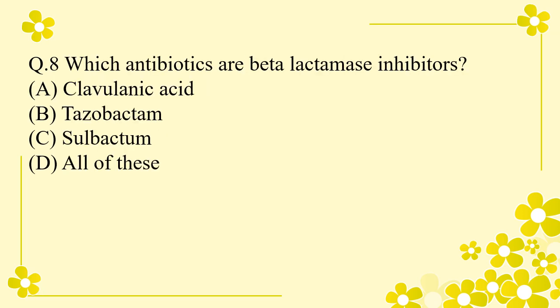Question 8: Which antibiotics are beta-lactamase inhibitors? Option A: clavulanic acid. Option B: tazobactam. Option C: sulbactam. Option D: all of these. The right answer is option D — all of these. That means sulbactam, tazobactam, and clavulanic acid are beta-lactamase inhibitors.